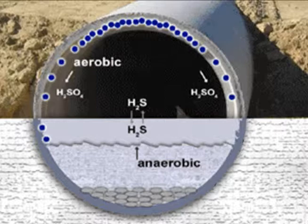In the vapor zone, anaerobic bacteria reduce sulfate into hydrogen sulfide gas, which, along with volatile organic compounds, create odor nuisance and problems to working personnel in the sewer. Of course, this process is extremely influenced by the pH, temperature, and concentration of species in the sewer.